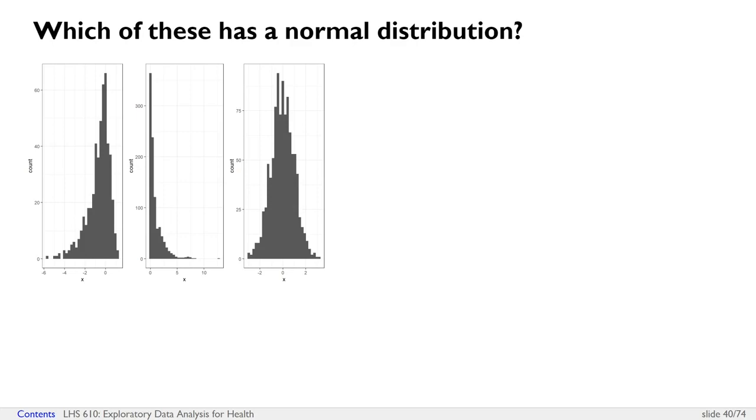In case you don't remember what a normal distribution looks like, the first histogram here has a left-skewed distribution. The second histogram here has a right-skewed distribution. And the histogram on the very right is normally distributed, because it has one peak and a nice tail on either side that's even and symmetric.